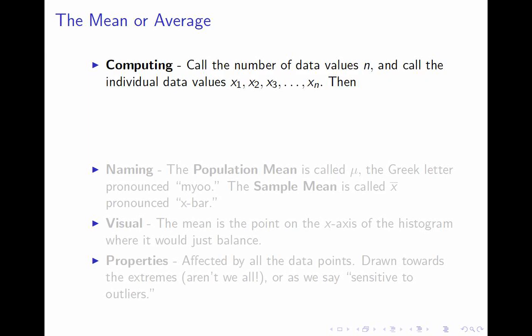We want a name for each data point. There are n of them, and we'll call them x-sub-1, x-sub-2, x-sub-3, up to x-sub-n — a variable with a different subscript for each data point. The formula for the mean is: add up all the numbers, x-sub-1 plus x-sub-2 plus dot dot dot up to x-sub-n, and divide by n.